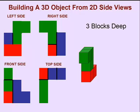Next, we'll figure out how wide this object is, and we can tell by looking at the top side and the front side that this object is also three blocks wide. The two blocks on the bottom,